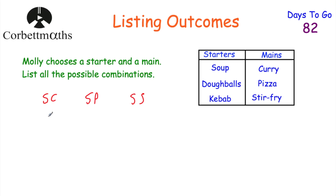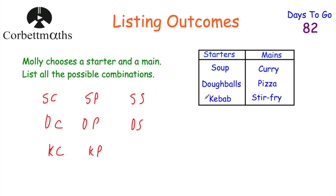Now let's move on to doables. She could have doables and curry, doables and pizza, and doables and stir fry. Then finally, moving on to kebab, she could have kebab and curry, kebab and pizza, and kebab and stir fry. And that's it — those are all the possible outcomes. I could have written them out in full, but I just used the letters to do it more quickly.